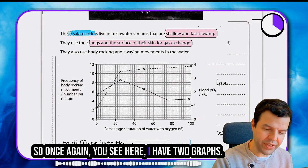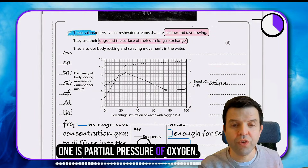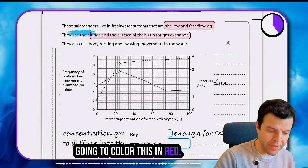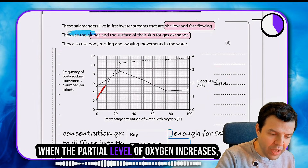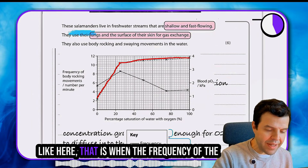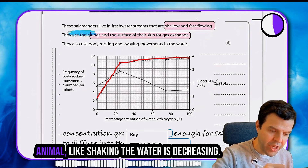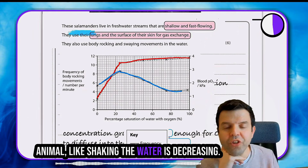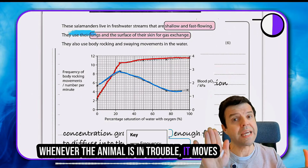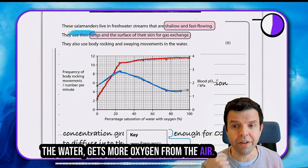So once again, you see here I have two graphs. One is partial pressure of oxygen — I'm going to color this in red. When the partial level of oxygen increases, that is when the frequency of the animal shaking the water is decreasing. Whenever the animal is in trouble, it moves the water and gets more oxygen from the air.